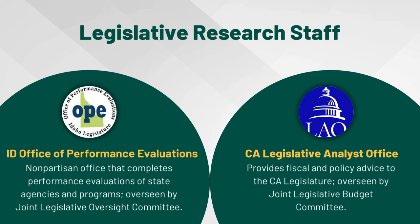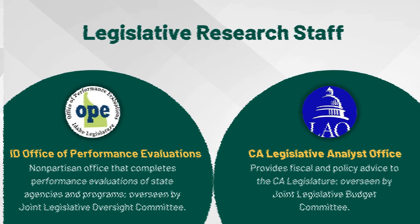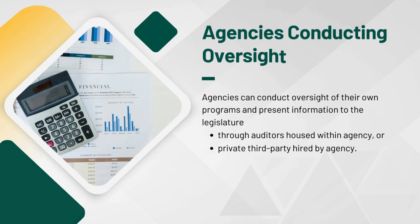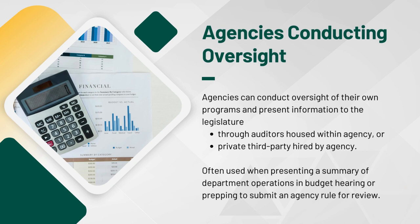Legislative research staff can be partisan or nonpartisan legislative employees evaluating governmental programs for public or internal use. Idaho's Office of Performance Evaluation does performance evaluations of state agencies and programs, and California's Legislative Analyst Office provides fiscal and policy advice to the California legislature — they even call themselves the eyes and ears for the legislature. Partisan staff across the country can also produce oversight reports and information for internal use on caucus priorities. Commissions are used to further study an issue and produce recommendations for improvement. Colorado does this through interim studies, where a committee assigns a commission of appointed experts to study and produce a report. Alabama's Commission on the Evaluation of Services advises the legislature through evidence-based policymaking reports on topics including suicide prevention programs. Agencies can also conduct oversight of their own programs and present information to the legislature through auditors housed within agencies or a private third party.